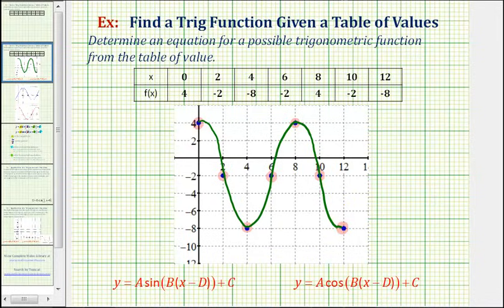Let's start by sketching the midline, which would be the horizontal line halfway between the maximum of positive 4 and minimum of negative 8. So the midline would be y equals negative 2.